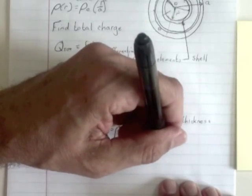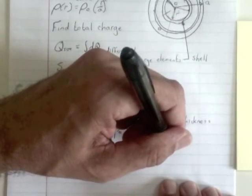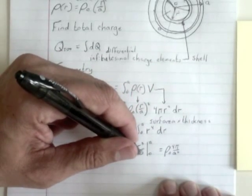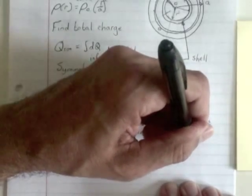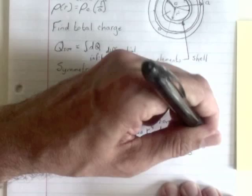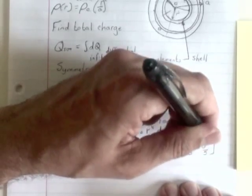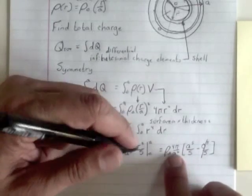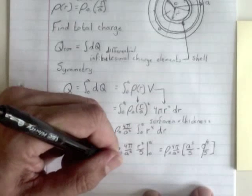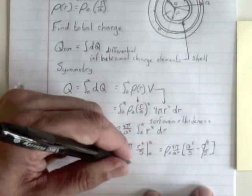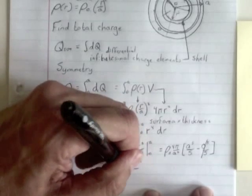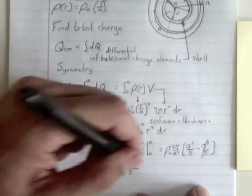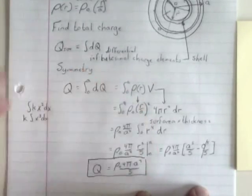Rho naught, 4 pi over A squared times A to the fifth over 5 minus zero to the fifth over 5. So we have A to the fifth over 5 minus zero, which is just zero. When we simplify that, A to the fifth divided by A squared, we end up having rho naught, 4 pi, A to the third divided by 5. So the total charge in that whole thing is like that.